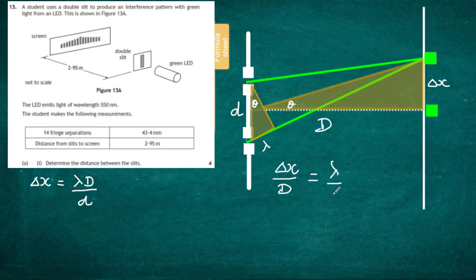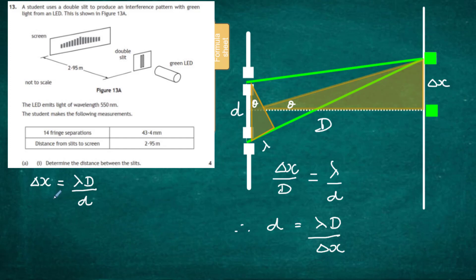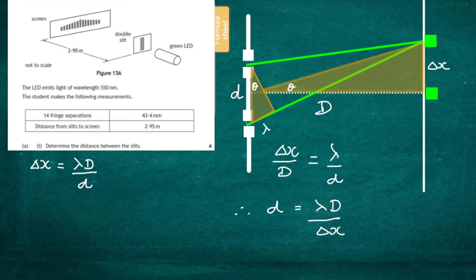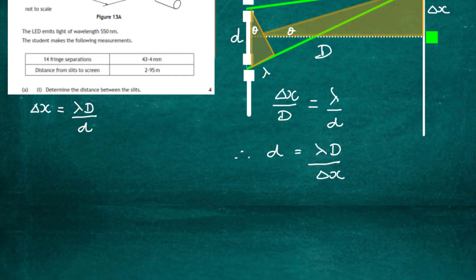We have two similar triangles. Looking at the ratios: delta x over capital D must equal lambda over small d. Rearranging, small d equals lambda times capital D divided by delta x. That's the equation we're going to use — easily derived from the formula sheet expression.